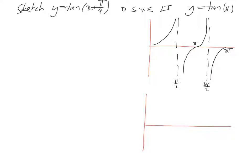The next thing we're looking at is how to sketch with a phase shift. So basically we've got tan of x and we've got our phase shift here of plus pi on 4.